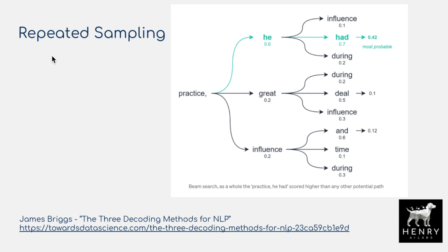The idea behind repeated sampling is to use different temperature and top-p parameters to have all these different decodings of these generation trees, then return the top 100 and see how many traversals — say 5, 50, 100, 500 — you need in order to get a winning solution for passing these unit tests.